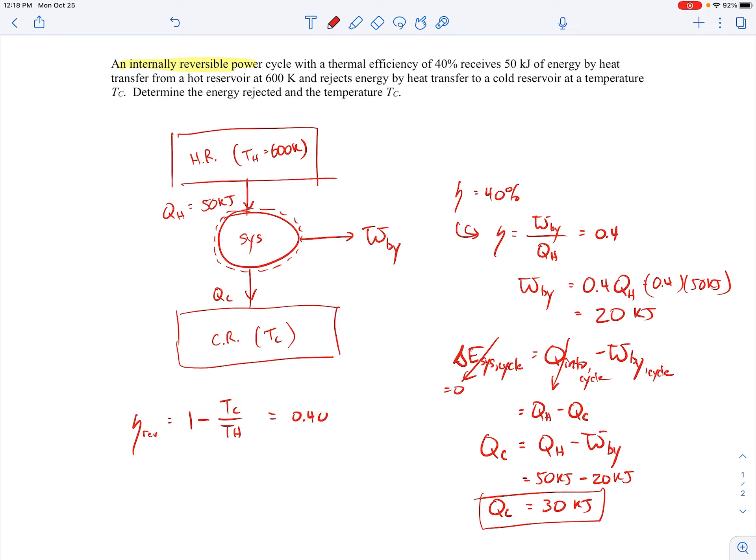And so since we're told that the efficiency is 0.4, it's 40%, and I know that TH is 600 Kelvin, I can solve for TC. So if I do that algebra, I'll get TC comes out to be 360 Kelvin.